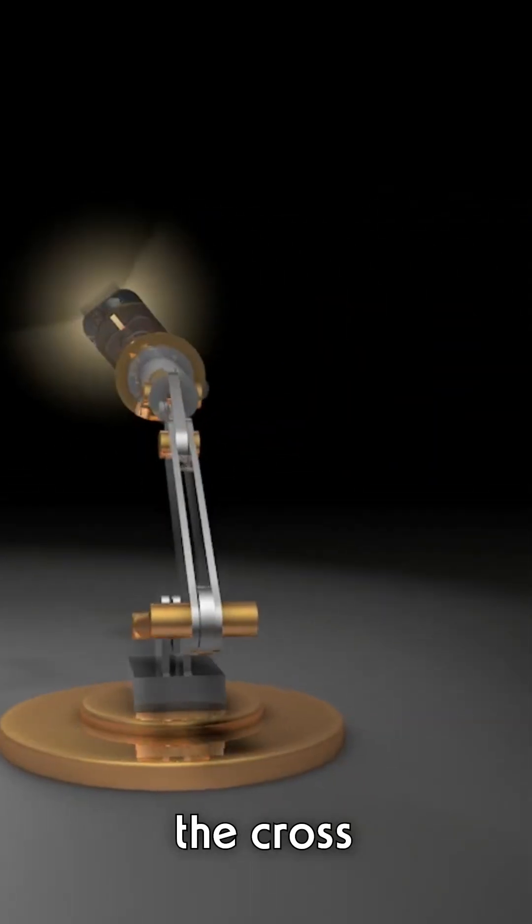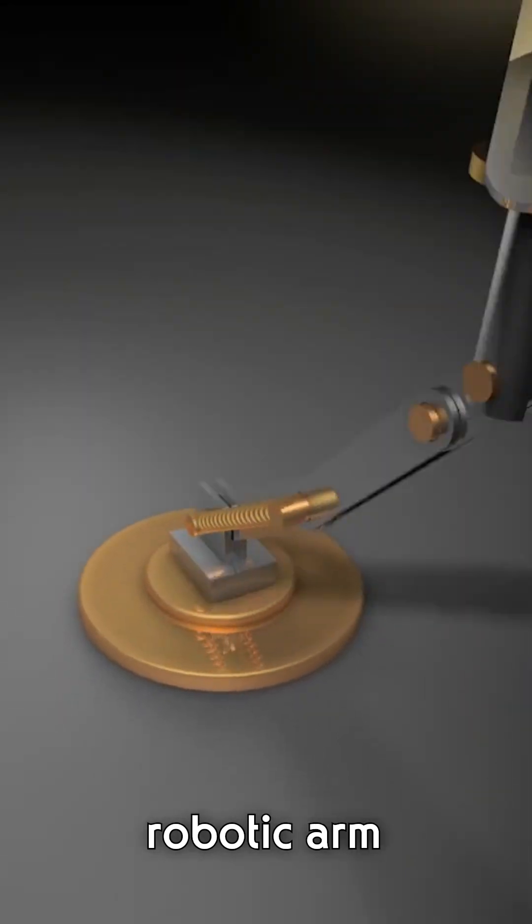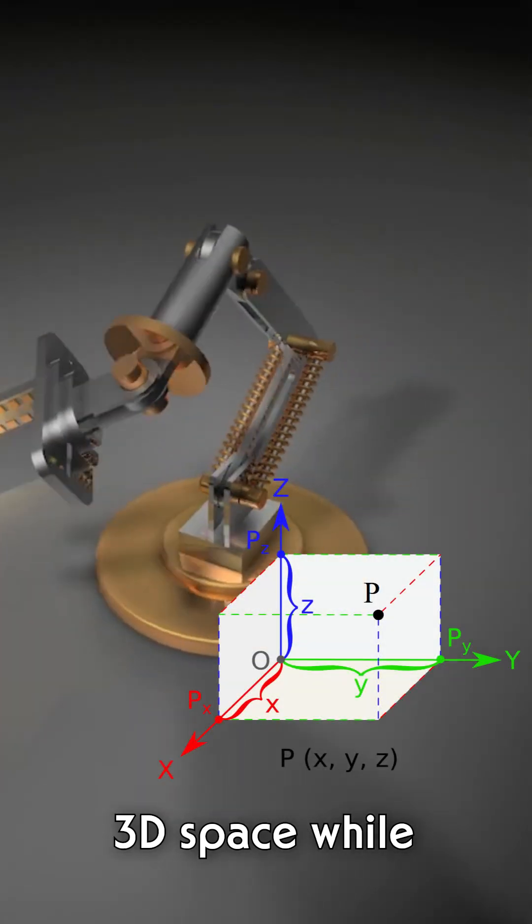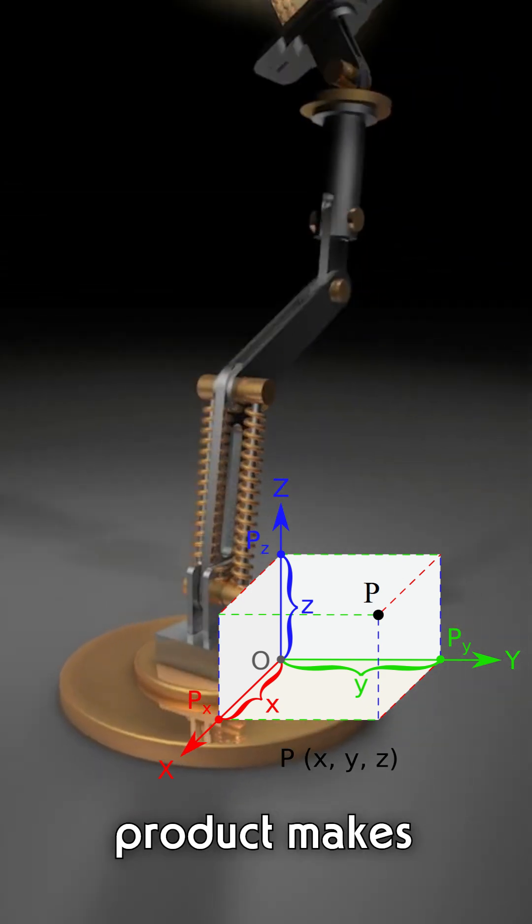In robotics, the cross product helps calculate torque and rotation. A robotic arm needs to know how to move in 3D space while keeping precise angles. Cross product makes this possible.